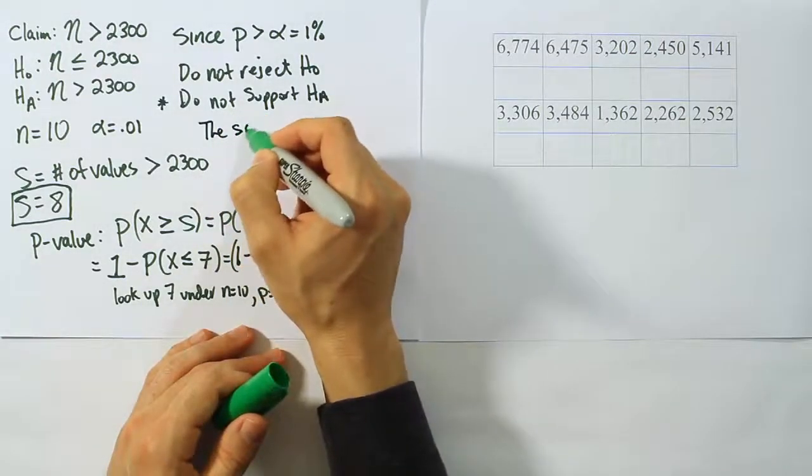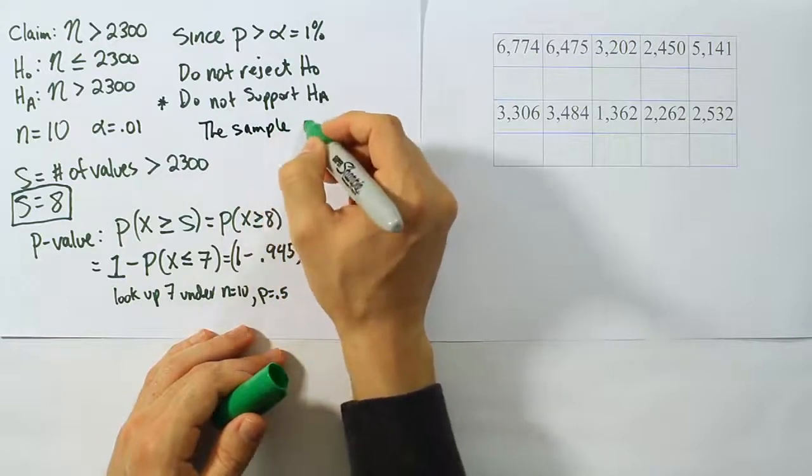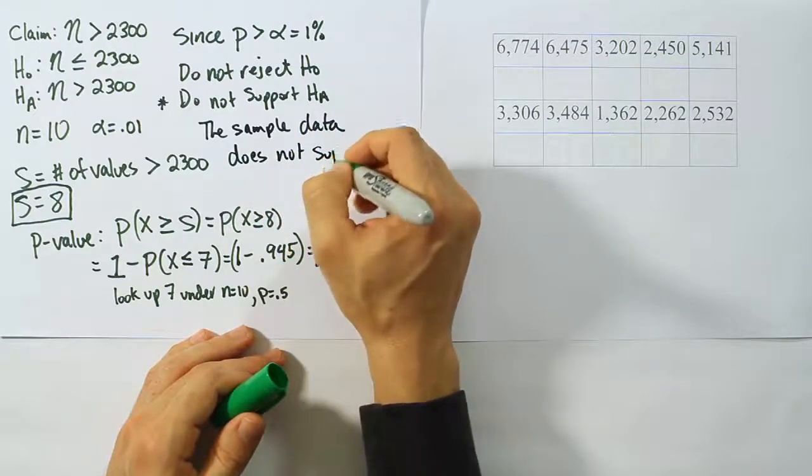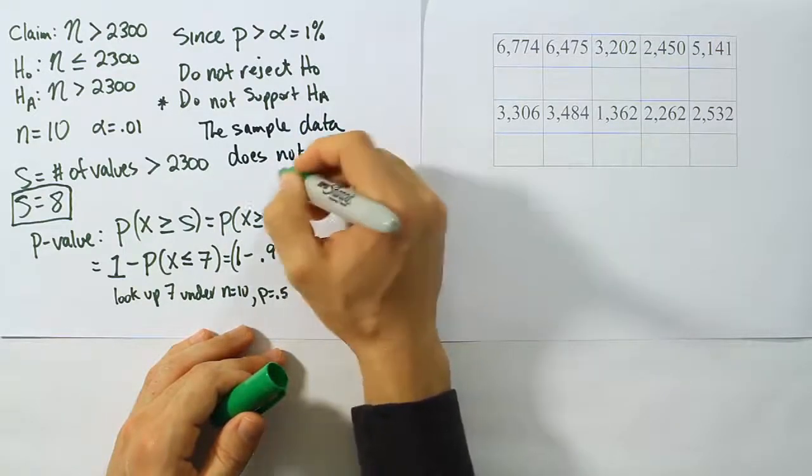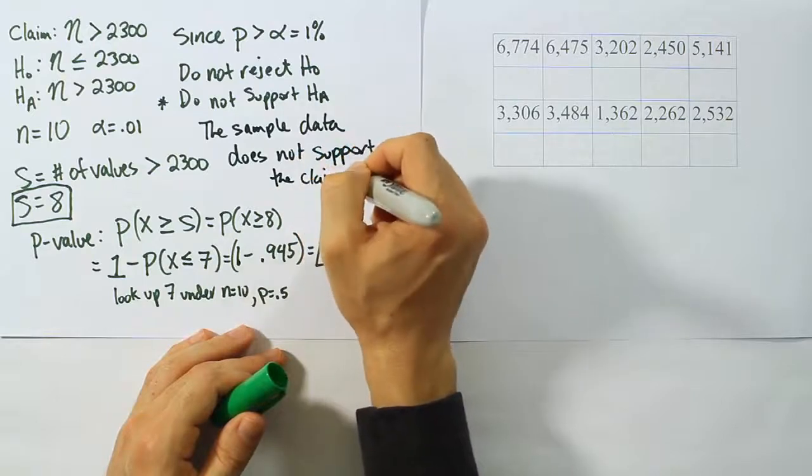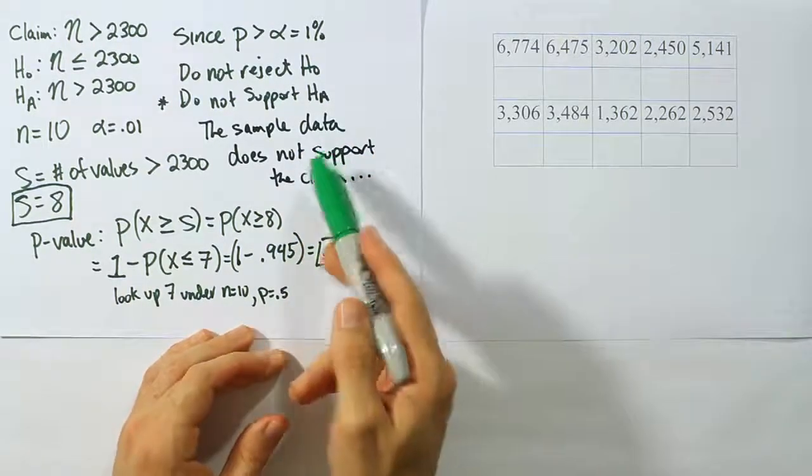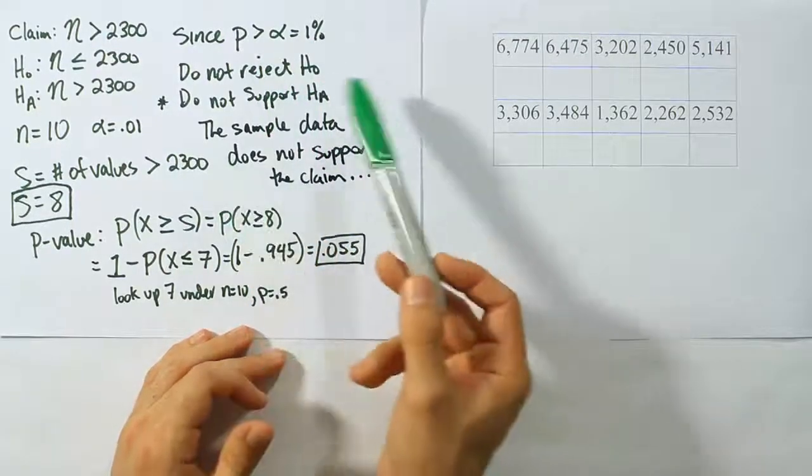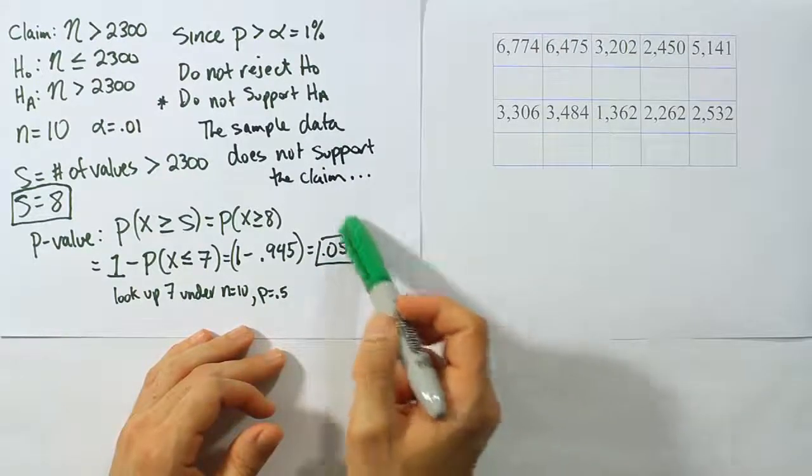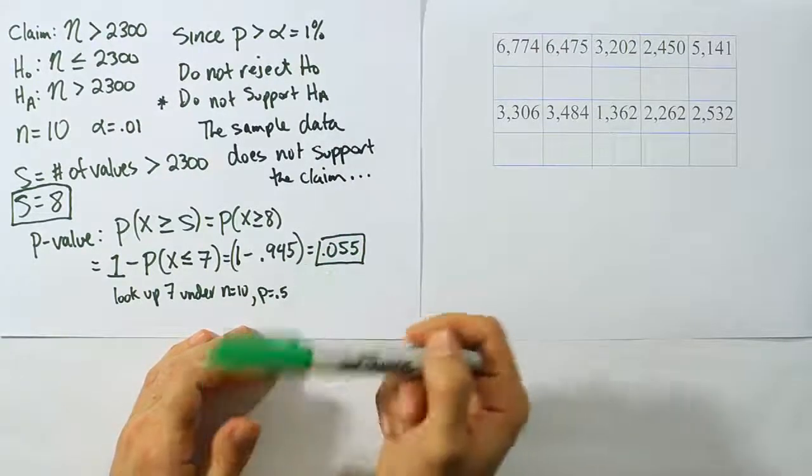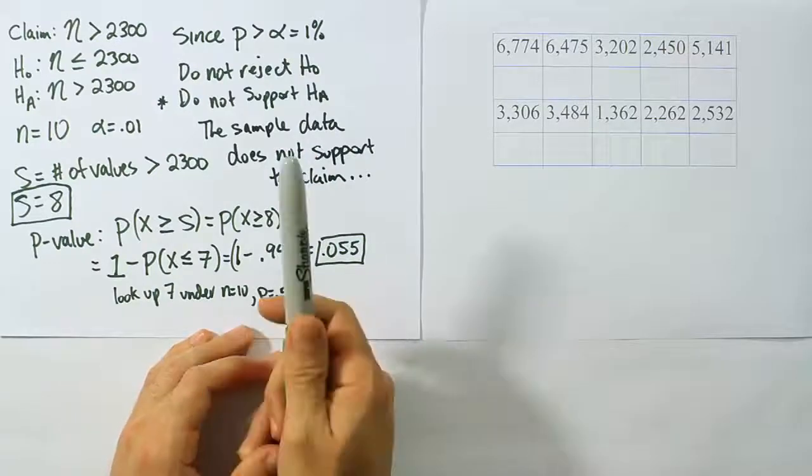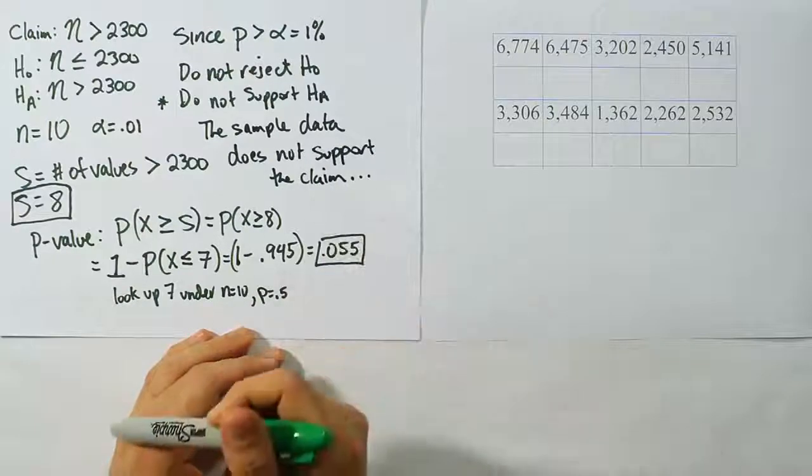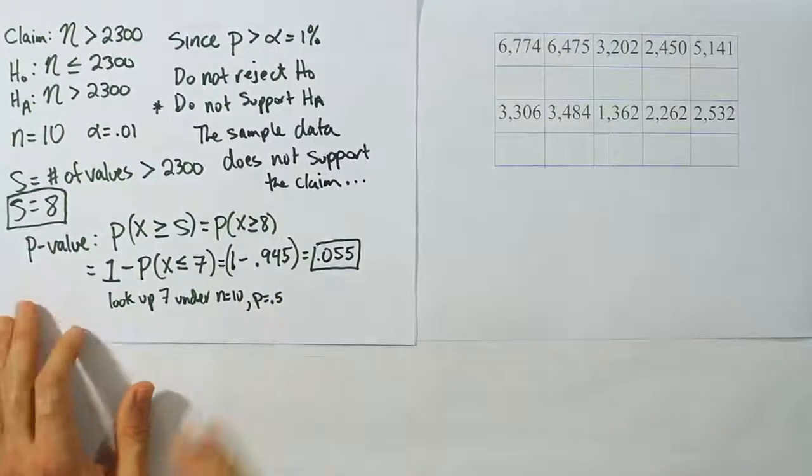Let's go ahead and express our final conclusion here, which is basically that the sample data does not support the claim. Here I would probably want to add that the sample data does not support the claim at the one percent significance level. Of course, at a ten percent significance level it would support the claim, because then we'd have a p-value that was less than alpha. So if alpha was ten percent, we would have been able to reject H0, but the fact that it's one percent, we weren't able to. Either way, not very happy with the result, but we did it correctly, and so that's it, that's the end of the problem.